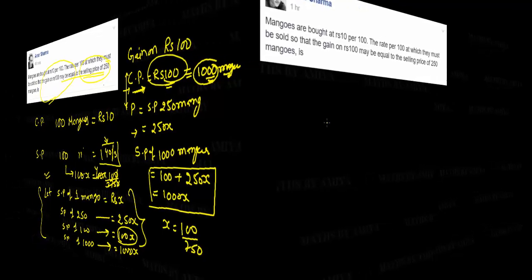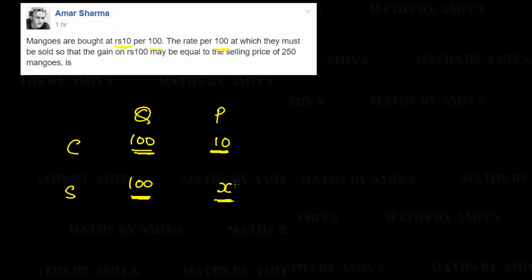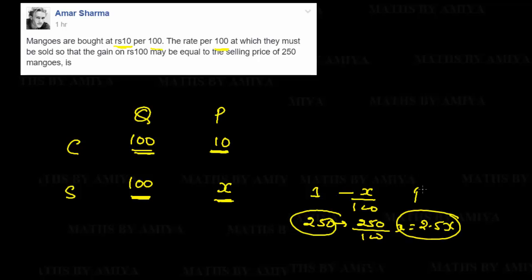Now let's check the second alternate method. We use a chart with quantity (Q) and price (P) for cost and sell sides. According to the question, we bought 100 mangoes at Rs.10, so cost quantity is 100 and cost price is Rs.10. We need to find the selling price of 100 mangoes, which is X. The selling price of 250 mangoes is therefore 250/100 × X = 2.5X, and this equals the profit.